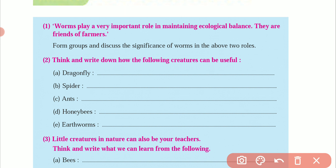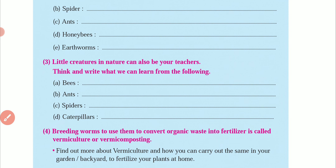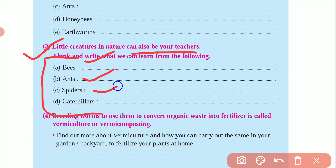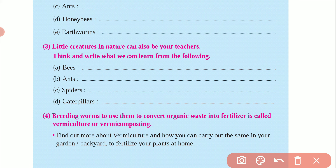The third activity: a little creature in nature can also be your teacher. We can learn something from little creatures and insects. From bees we can learn hard work. From ants we can learn teamwork. From spiders we can learn patience. And from caterpillars we can learn transformation. You can write these down — most probably your school teachers will not ask you to write this in your books, as it is just an activity.